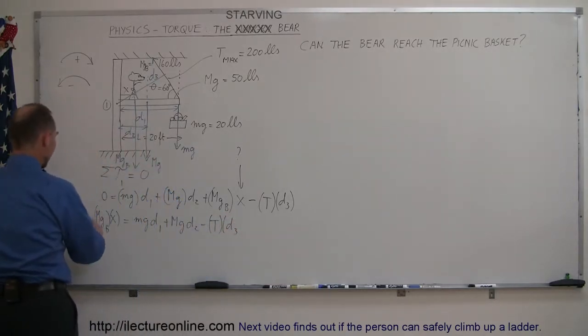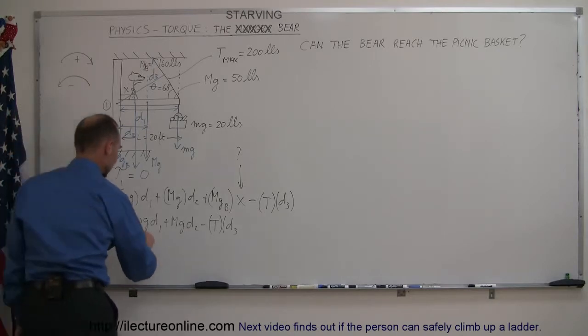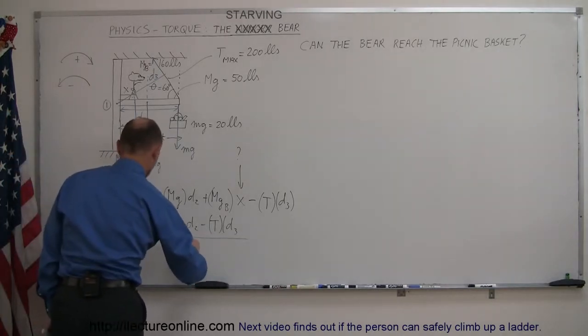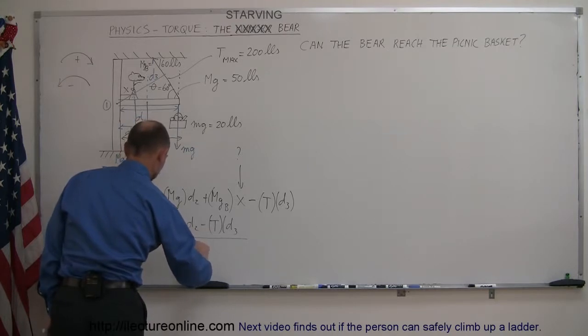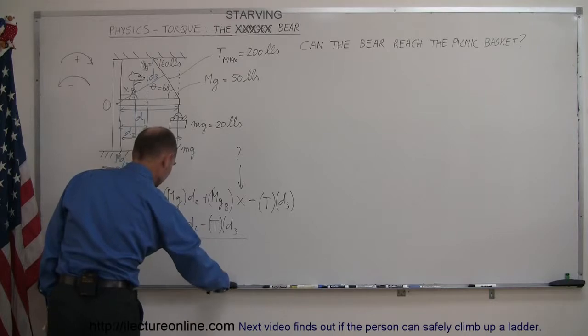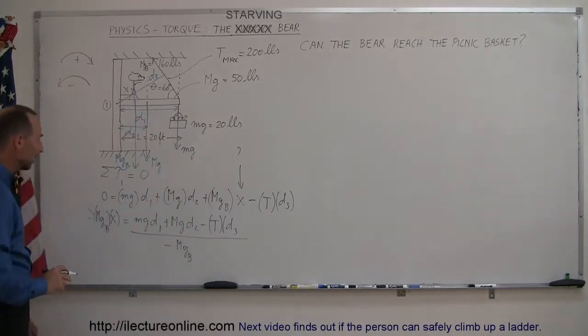Then I'm going to divide both sides by the minus MGB, minus MGB. And that now gives me the equation that solves for X.